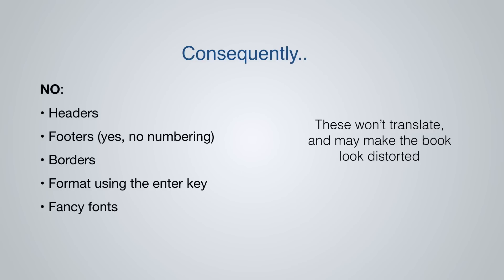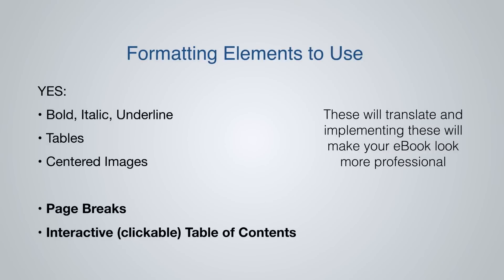Do not use any fancy or rare fonts, as they will not be converted to the Kindle file. There's no use spending time finding the right unusual font if it won't carry over. On the flip side, formatting elements you should use include bold, italic, and underlined text; tables; and images that are centered and preferably high-DPI with a high resolution — a high dots-per-inch count.